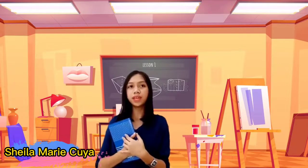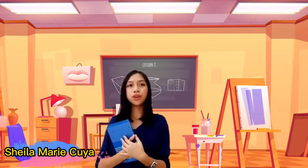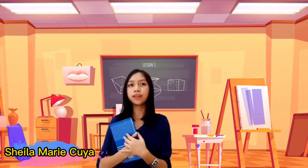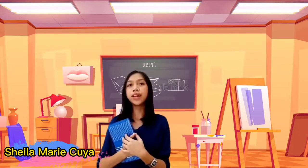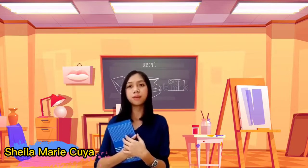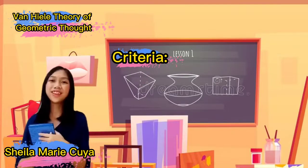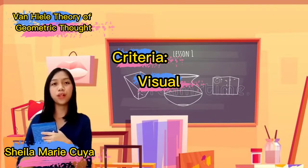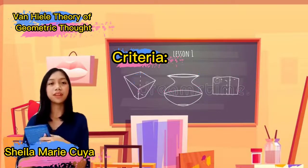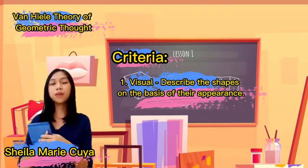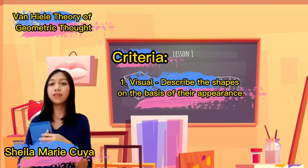For today's activity, each of you will be assigned to paint using the concept of geometry and each of you will present the output in front of the class. You will be graded according to criteria relating to Van Hale's theory of geometric thoughts. First in our criteria is the visual, equivalent to 20% — you should be able to describe the shapes of your art on the basis of their appearance.